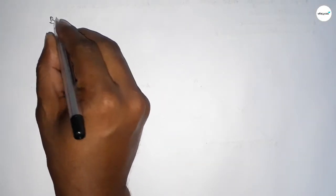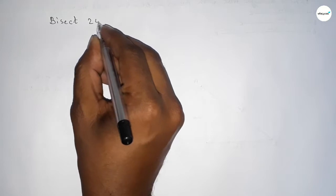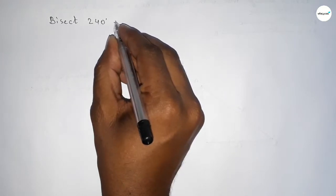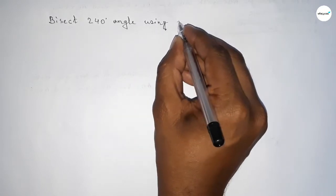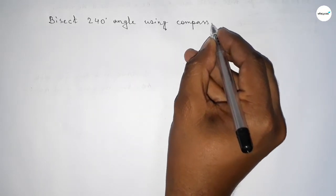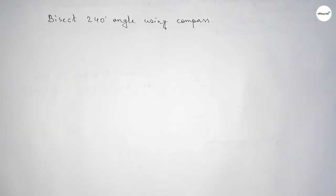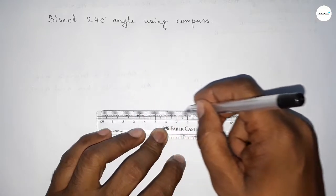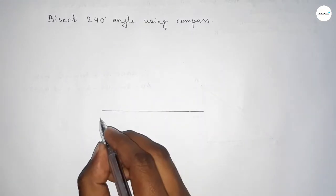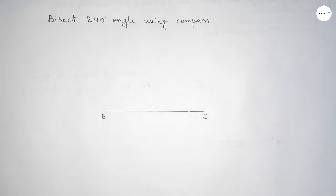Hi everyone, welcome to Si Share Classes. Today in this video we have to bisect a 240 degree angle using a compass. So let's start the video. First of all, we have to draw a line of any length, taking point B here and point C here. Now we have to draw a 240 degree angle at point B.